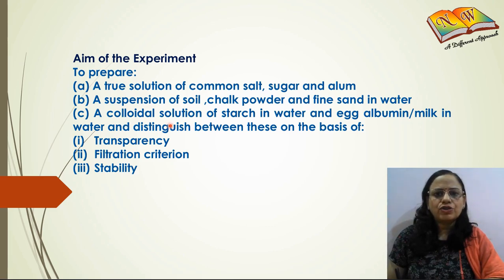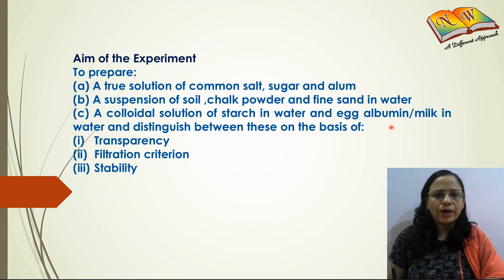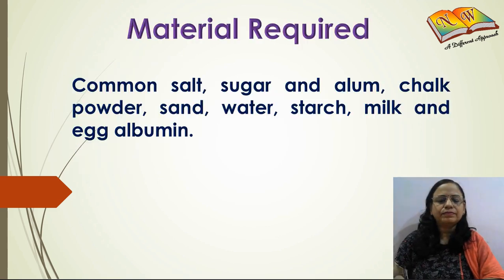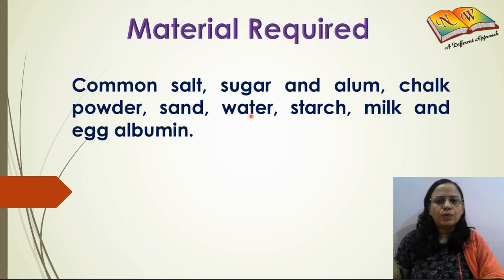In the third part, we will be preparing a colloidal solution using starch dissolved in water, or we can also use egg albumin or milk — you can pick any one and dissolve it in water. Then we will compare the true solution, the suspension, and the colloidal solution on the basis of transparency, filtration criterion, and stability. The materials required are common salt, sugar, and alum for a true solution; chalk powder, sand, water, and soil for a suspension; and starch, milk, or egg albumin for a colloidal solution.